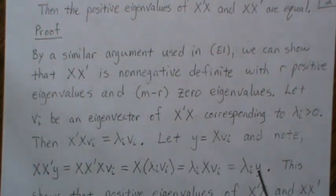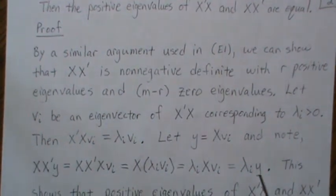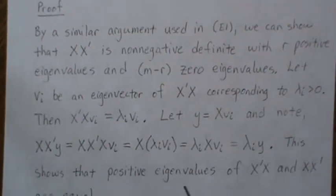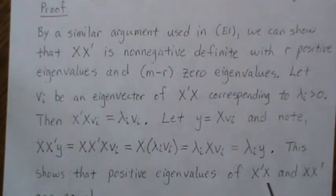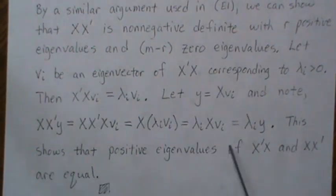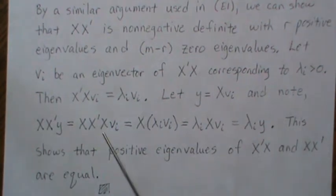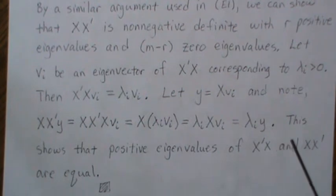So now this says that lambda I is actually an eigenvalue of X X prime, and Y was an eigenvector. So this shows that the positive eigenvalues of X prime X and X X prime are equal, because this is true for every positive eigenvalue of X prime X. So they have to be equal.